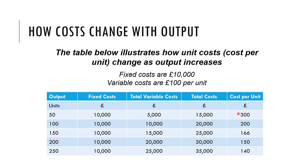Look at what's happening to the cost per unit — it's going down as we increase the scale of production. The cost of each unit decreases effectively because the fixed costs are spread over a large amount of units. So businesses may seek to achieve economies of scale through growth.